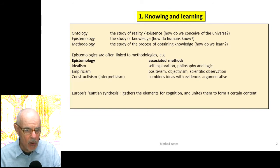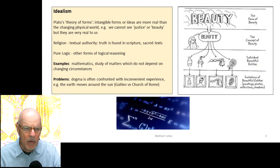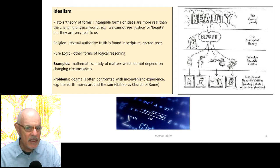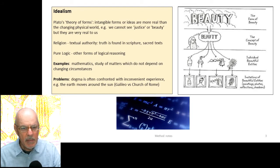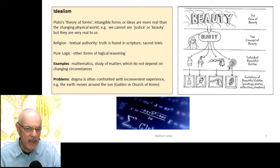Europe's Kantian synthesis, which tried to resolve idealism and empiricism, is said to gather elements for cognition and unite them to form a certain content — ideas with evidence. Idealism has been linked in the Western tradition to Plato's theory of forms: intangible forms or ideas are considered more real than the changing physical world. He said we can't see justice or beauty, but they're very real concepts. Similarly, in religion, truth is found in scripture. Pure logic and mathematics are also idealistic — studying matters which don't depend on changing circumstances.